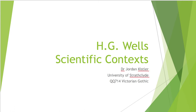Today, we're going to be looking at three short stories written by H.G. Wells and published in the 1890s. These follow on quite naturally from last week's text, Bram Stoker's Dracula, which is often defined as part of the Imperial Gothic.